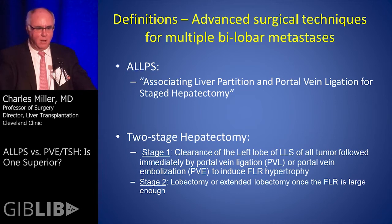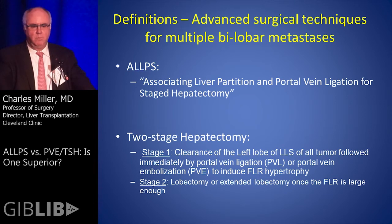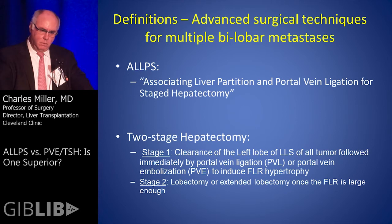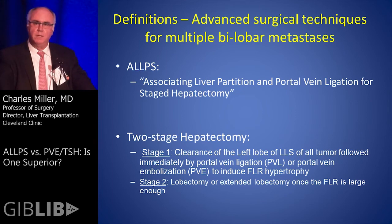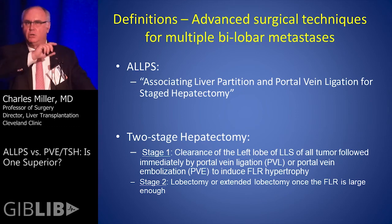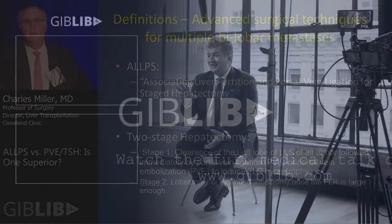Now we can define it. ALPS: associating liver partition and portal vein ligation for staged hepatectomy. The definition of two-stage hepatectomy is, first, clearance of the left lobe or left lateral segment — just like shown in the previous talk — of all tumor found in that area.